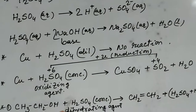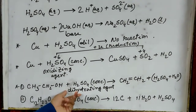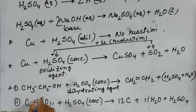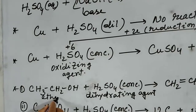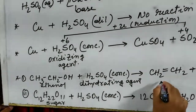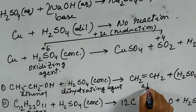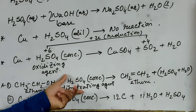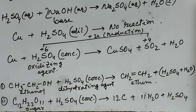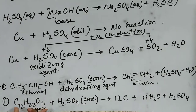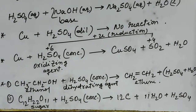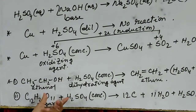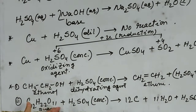Concentrated sulphuric acid is also a dehydrating agent. The chemical substances which absorb water from another substance are known as dehydrating agents. When concentrated sulphuric acid reacts with ethanol, it produces ethene and absorbs water from ethanol. Additionally, concentrated sulphuric acid absorbs water from sugar to produce carbon, which is black in colour. That is why when concentrated sulphuric acid is added to sugar, it turns black.